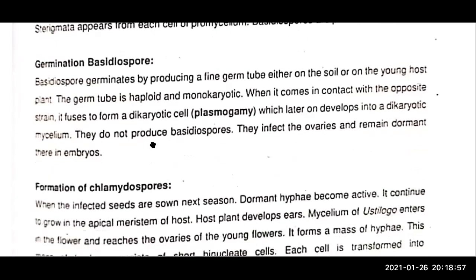Germination of the basidiospores: the basidiospore germinates by producing a large fine germ tube either in the soil or on the young host plant. The germ tube is haploid and monokaryotic. When it comes in contact with an opposite strain, it begins to form the dikaryotic cell — this is known as plasmogamy. They then infect the ovaries and remain dormant in the embryos.